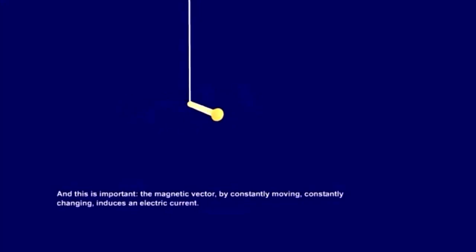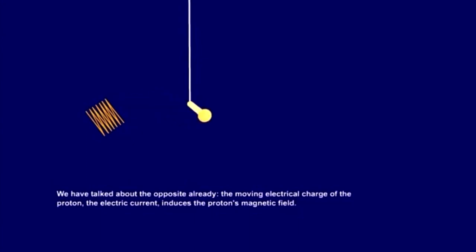And this is important. The magnetic vector, by constantly moving, constantly changing, induces an electric current. We've talked about the opposite already. The moving electrical charge of the proton, the electric current, induces the proton's magnetic field.